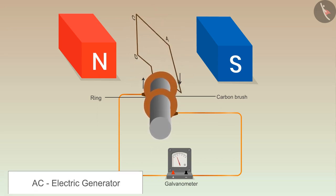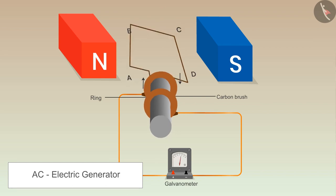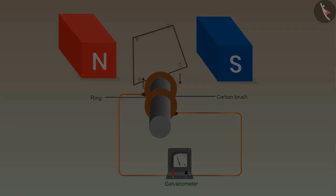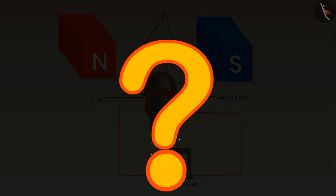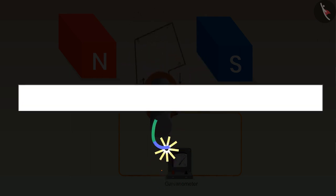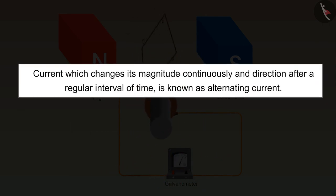These types of generators are known as AC generators. What is this AC? The current which changes its magnitude continuously in direction after a regular interval of time is known as alternating current.